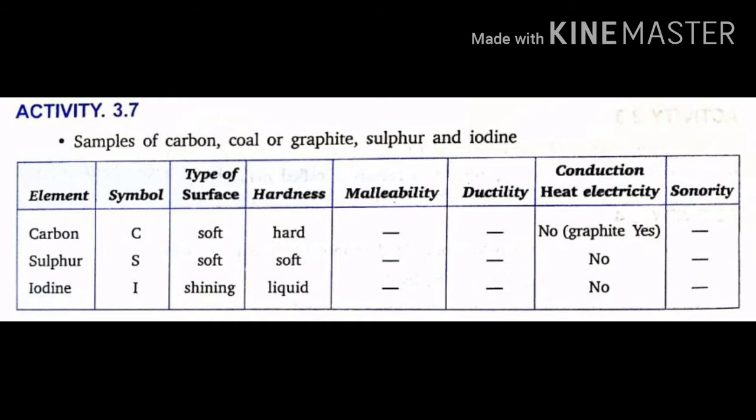Carbon, symbol C: soft surface, hardness — hard, non-malleable, non-ductile. Heat conduction — no, except graphite. Sonority — non-sonorous.